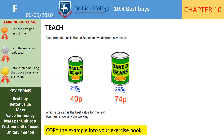Another exam question: a supermarket sells baked beans in two different size cans — 215 grams for 40p and 395 grams for 74p. Which size is the best value for money? You must show all your working out. Just to highlight: if you put the correct answer with no working out, your answer is technically correct but you score zero marks.